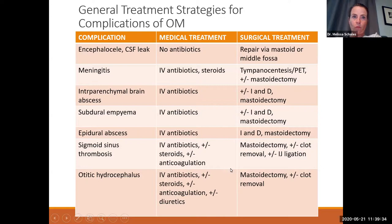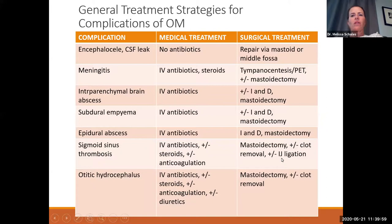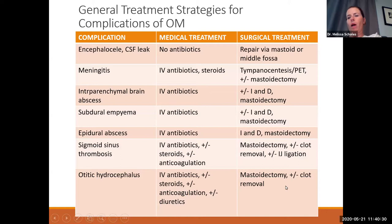For sigmoid sinus thrombosis: steroids, antibiotics, and anticoagulation. Mastoidectomy is often done to decompress the sigmoid and irrigate the middle ear to reduce infectious burden. Clot removal and IJ ligation to prevent spread can also be considered. Otitic hydrocephalus — caused by ear infection inflammation leading to decreased CSF absorption — is treated with antibiotics, steroids, anticoagulation, and diuretics, plus or minus mastoidectomy and clot removal.